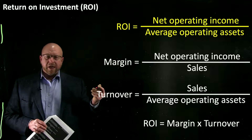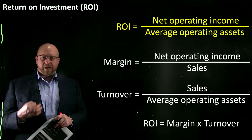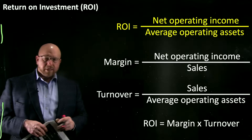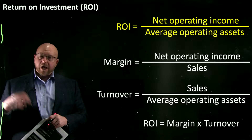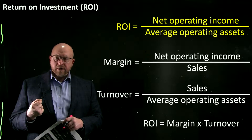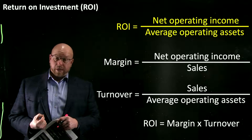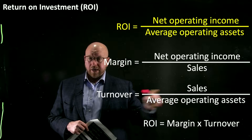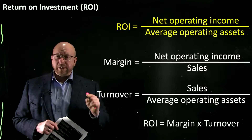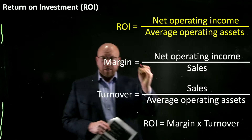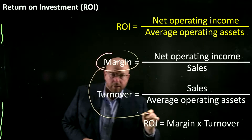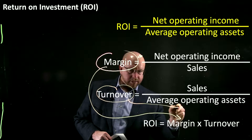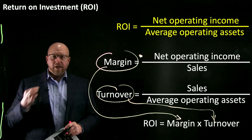Turnover looks at what kind of sales activity we generated based upon the assets we have — it's really an activity ratio. Higher turnover is considered better, but you've got to consider whether those sales revenue dollars are profitable. It's only better turnover if the sales are profitable. If you're selling at a loss, a higher turnover ratio will just help you dig the company's grave more quickly. That's why it's more powerful to take margin, which includes a measure of profitability, and multiply it by the turnover — allowing us to measure sales activity and include a profit component.